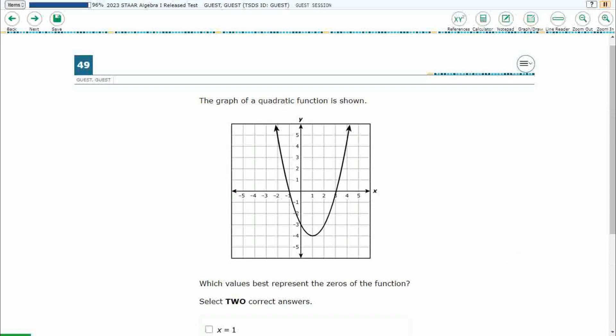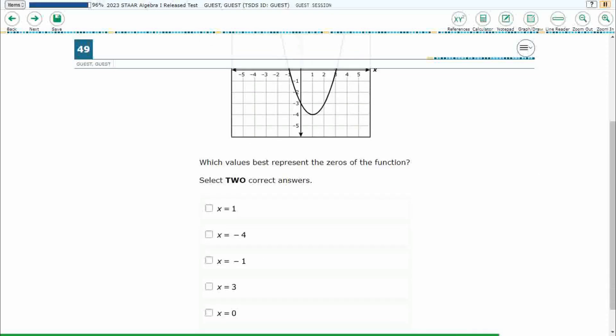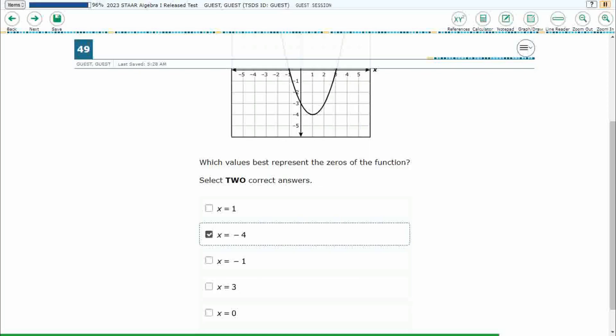Alright, so this is Multiple Select, so it says in bold caps we need to select two correct answers. Watch what happens if I just pick a random one and try to hit Next. It is going to give us that error message. This is a two-point problem.